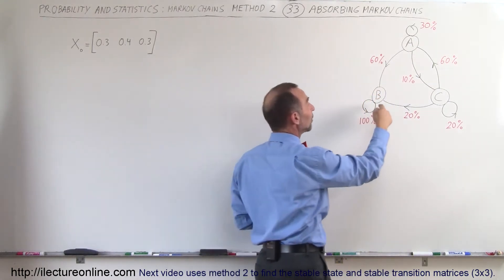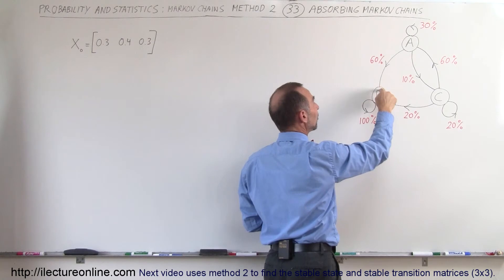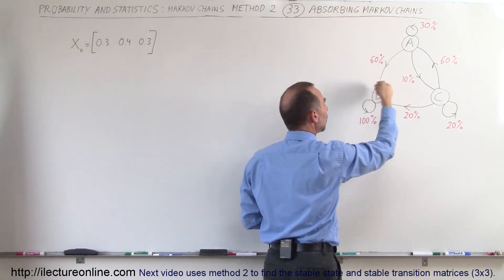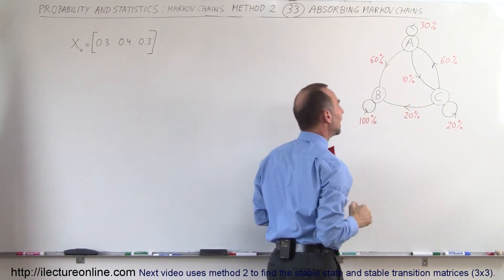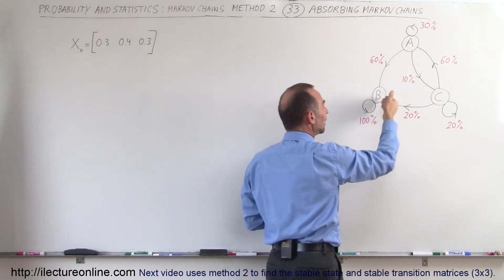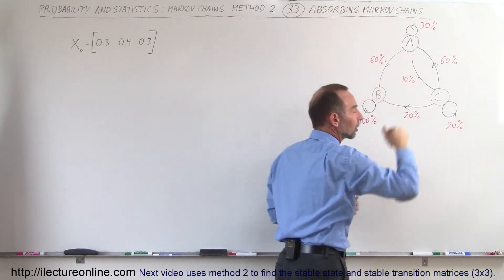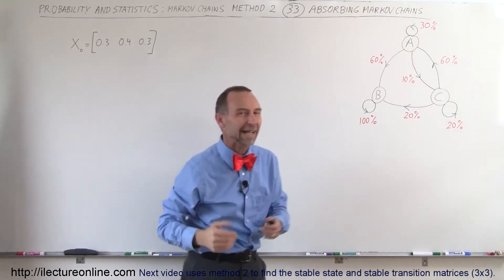And finally, store B. Notice that whatever customer goes to store B doesn't ever go back to A or C, will remain a loyal customer to B, and the only thing that happens is that B will end up with more and more customers but none of the customers will leave B to go to either A or C.